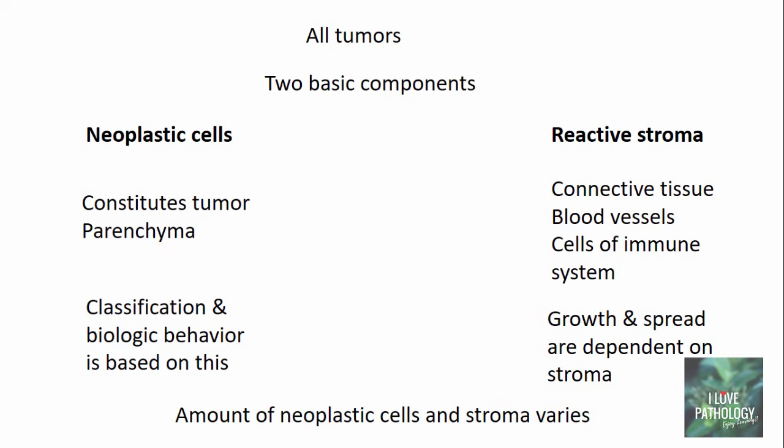The amount of neoplastic cells and stroma varies from tumor to tumor. In some tumors the neoplastic cells are predominant, making them very fleshy in appearance. Whereas in some tumors the stromal component is more than the neoplastic component — for example, in infiltrating ductal carcinoma of breast, the stromal component is super dominant. There will be exuberant fibroblastic proliferation, and that we refer to as desmoplasia or the desmoplastic stroma. These tumors will be very hard in consistency.